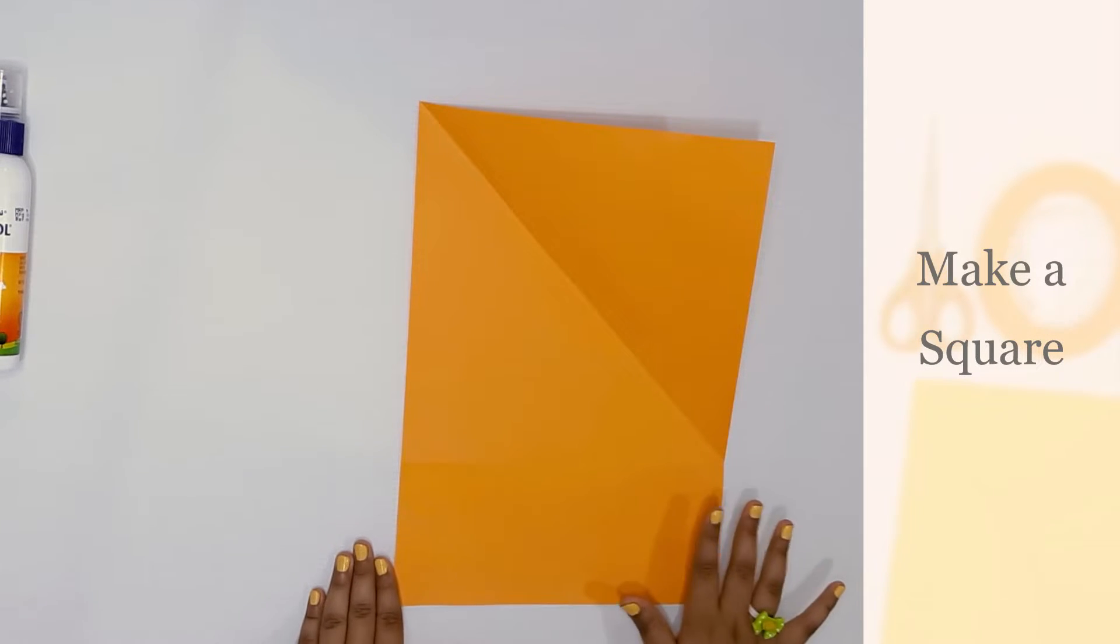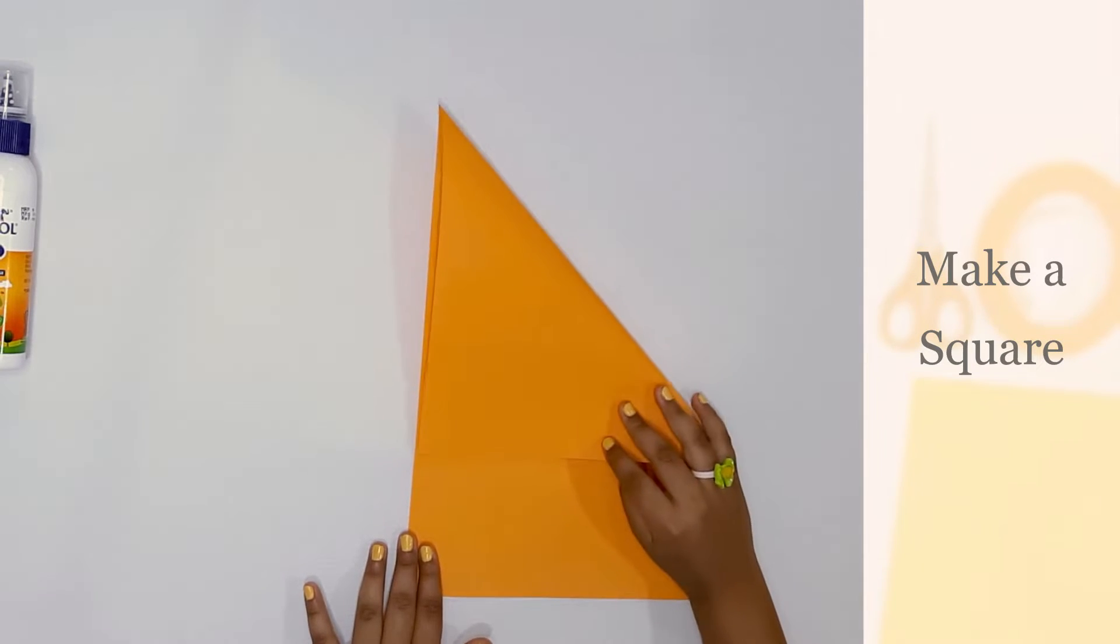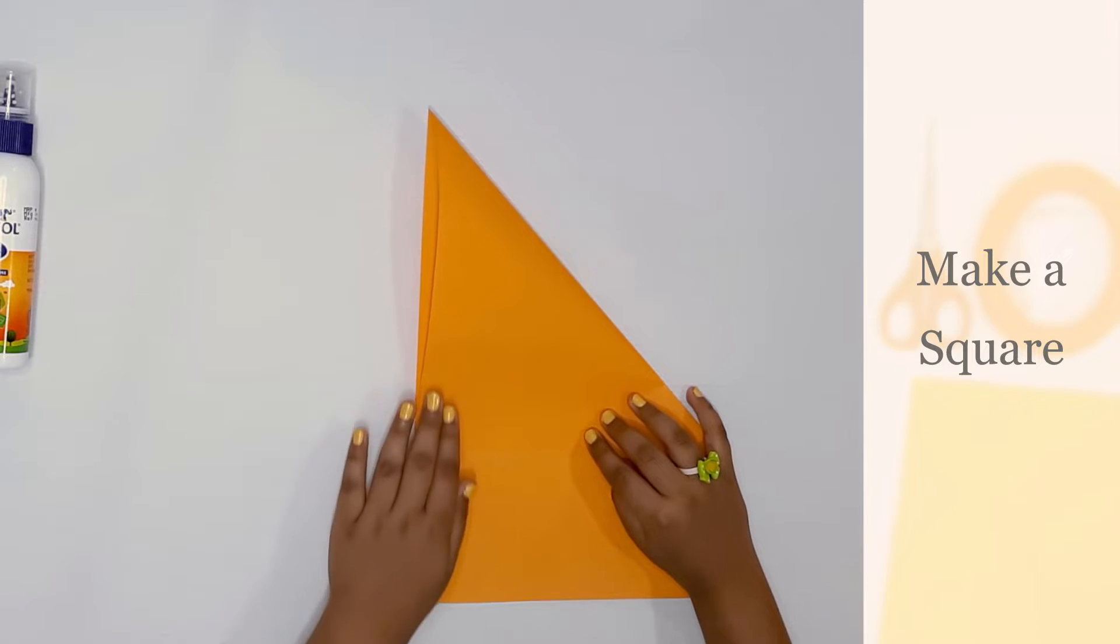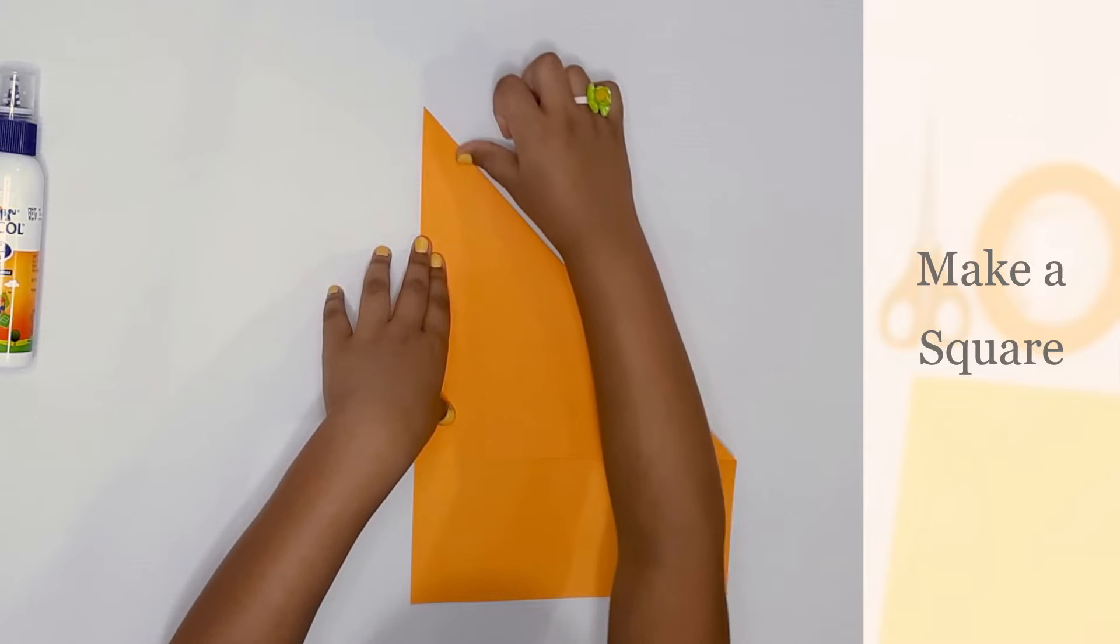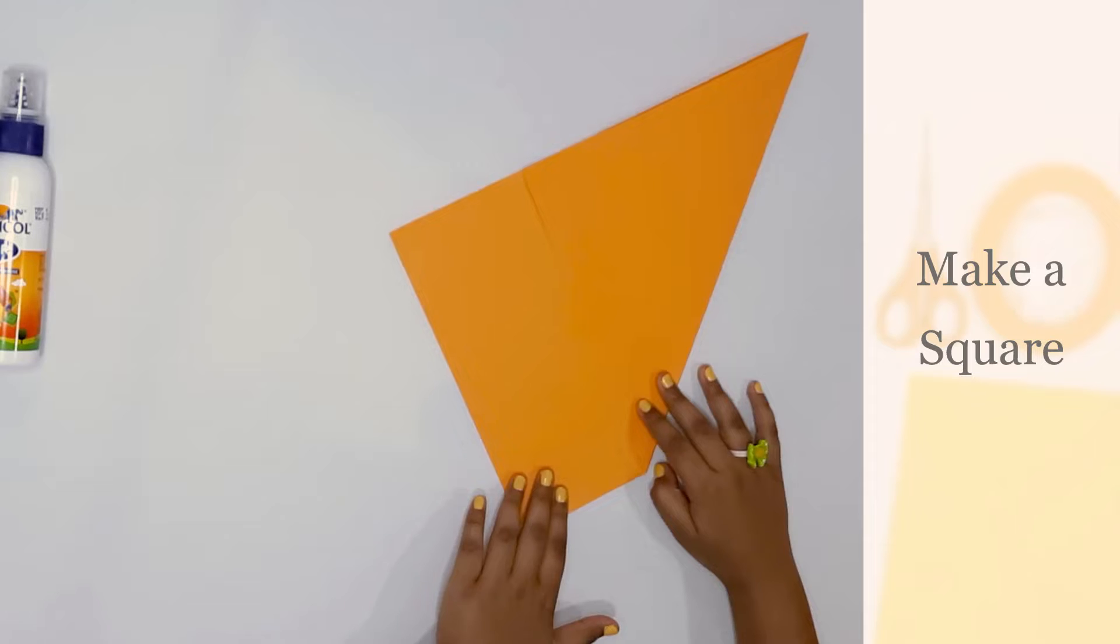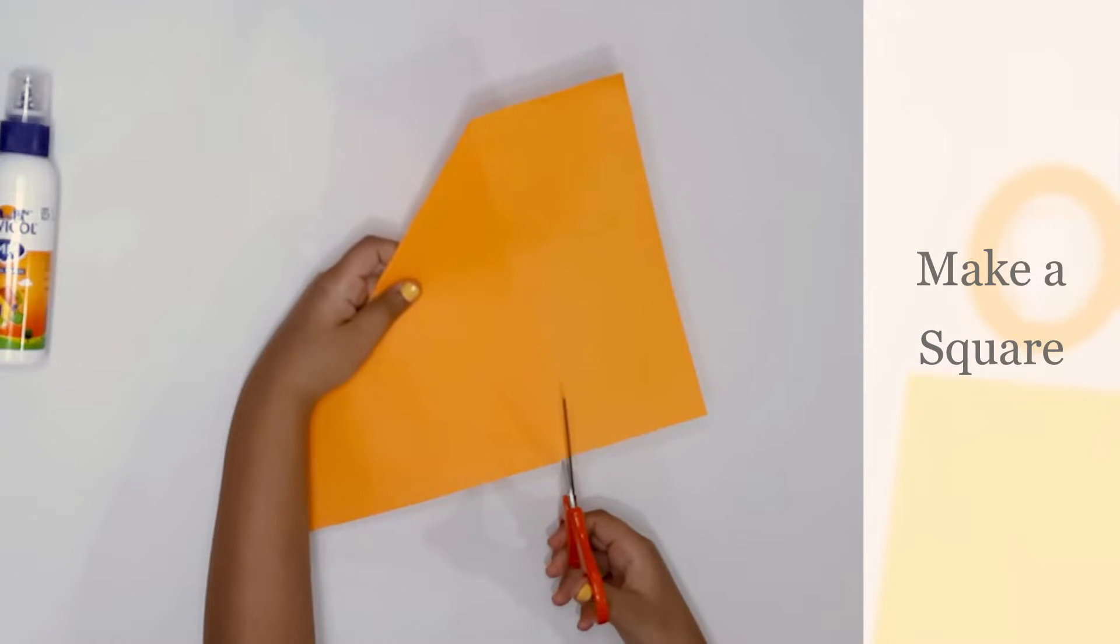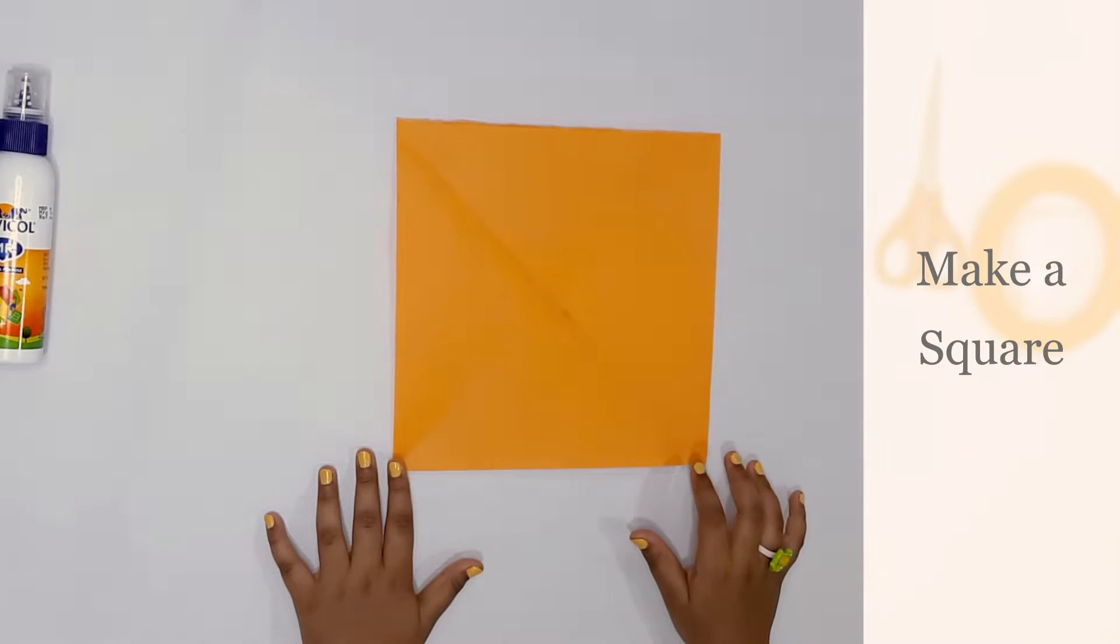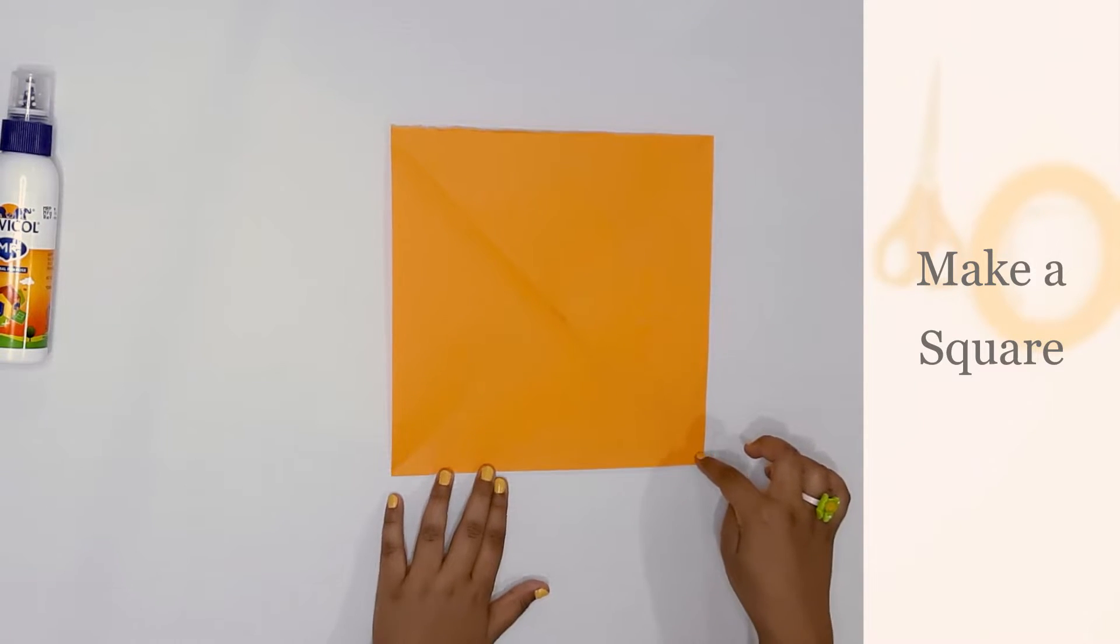Now take a sheet of paper and we are going to make a square. We have this portion below. So take the scissors and then cut it. Now we got a square in this line.